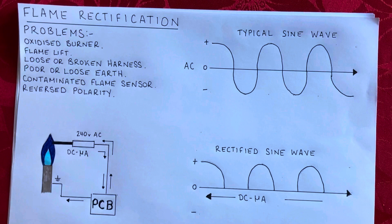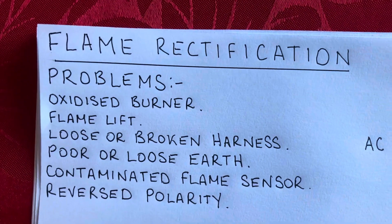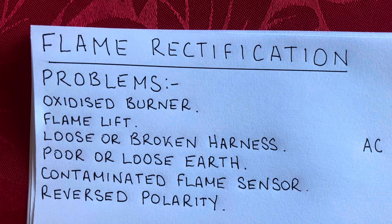I've done one of my diagrams and first we're going to talk about the problems you can have with flame rectification. Basically, flame rectification is confirming to the PCB — the circuit board — that there's a flame present, and that it's safe to open the main gas valve solenoid.